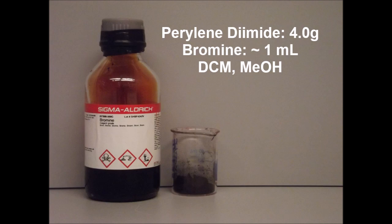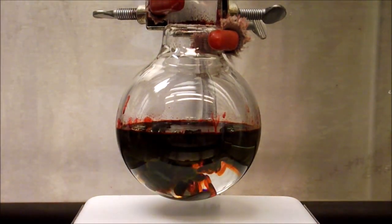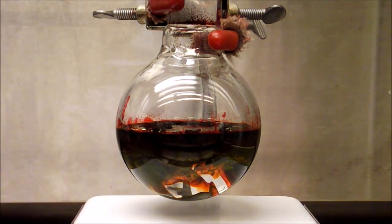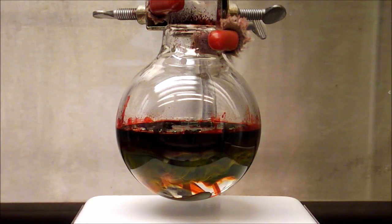For this reaction we will require bromine and n-hexyl PDI which we made in a previous video as well as dichloromethane and methanol as solvents. First, to a round bottom flask containing about 125 mL dichloromethane is added 4g of n-hexyl PDI. The funnel and the flask were rinsed with a small amount of DCM.